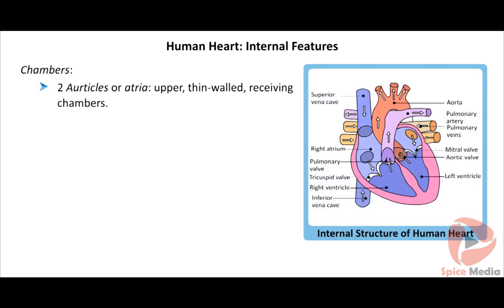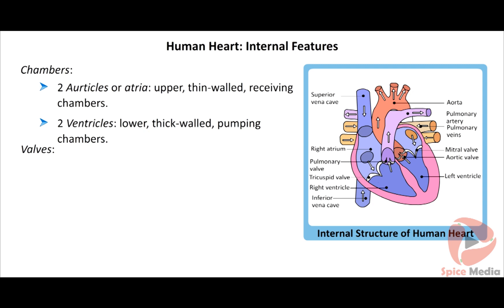Two upper thin-walled chambers called auricles or atria are involved in receiving blood. Two lower thick-walled chambers called ventricles pump blood to various parts of the body. Unidirectional flow of blood is controlled inside the heart by the presence of flap-like structures called valves.